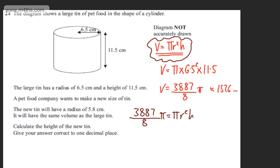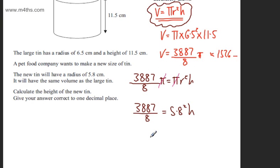So if we look at this here, we could at this stage just divide both sides by the π. These are going to cancel. Now we already know the radius so all I'm going to write at this stage is that 3887 over 8 is equal to the radius which is 5.8 squared multiplied by the height.